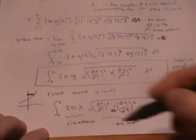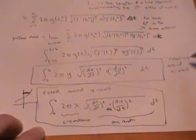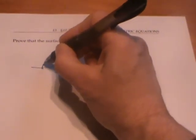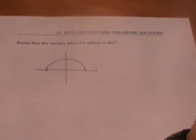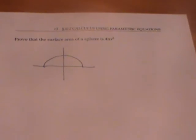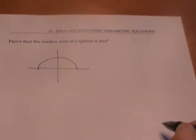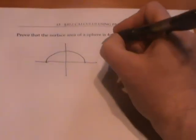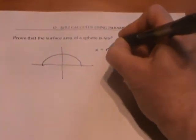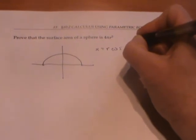So let's use one of these formulas to prove that the surface area of a sphere is given by the formula 4πr² where r is the radius of the sphere. So I need to write this sphere as a surface of revolution. So I can rotate around the x-axis, this curve here.